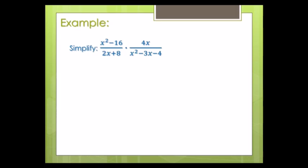So I'm going to multiply these rational expressions together. I can see I have a combination of loners and groups. Since I have groups, I'm going to follow the steps as given in the notes — start by factoring everything. I can look ahead and see that I don't need to flip the second fraction because I'm already dealing with multiplication, so I skip step two. I have a difference of squares on top of the first fraction.